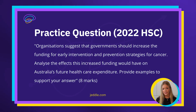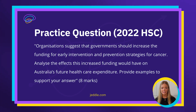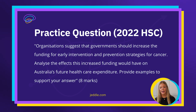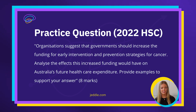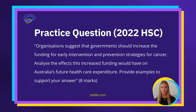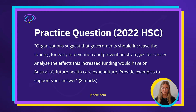So let's break down a practice question. Organisations suggest that governments should increase the funding for early intervention and prevention strategies for cancer. Analyse the effects this increased funding would have on Australia's future healthcare expenditure. Provide examples to support your answer. One thing to note here is that it's an 'analyse' question, which requires you to make a judgment on what you're saying.